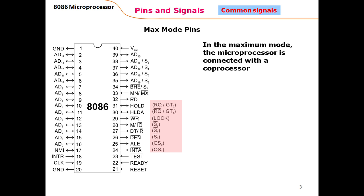The 8086 or 8088 microprocessor can operate in two modes: one is called the maximum mode and the other is called the minimum mode. The major difference in terms of pins is that some pins work differently depending on the mode. For example, pins 24 through 31 have different functions when the microprocessor is operating in the minimum mode versus the maximum mode.